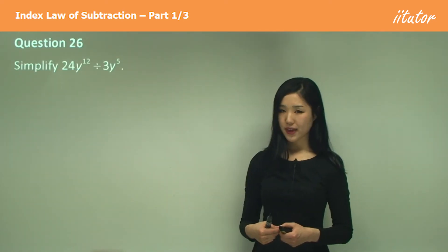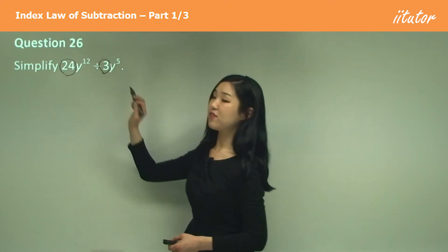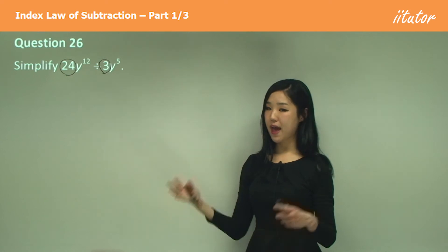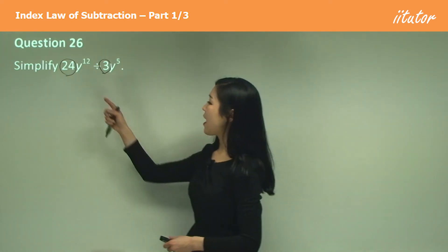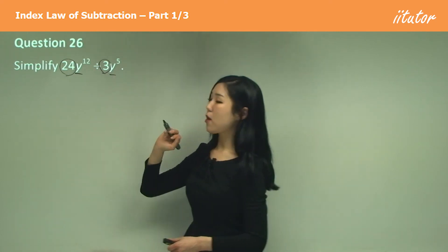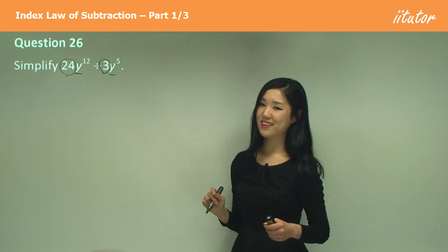Now, as we did with the multiplication one, you gather your numbers together when we're dividing as well. So you put 24 divided by 3 out the front and then work with the pronumerals. See how they both have a base of y? So when we're dividing them, we subtract the indices.